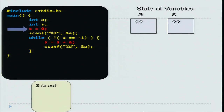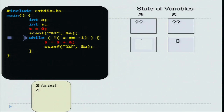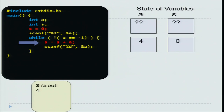Let us trace the execution of this program on a sample input and try to understand how it works. Let us say that I compile the program successfully and run it — I run a.out. Let the first number be 4. After initialization, variable a is undefined and s is also undefined; after the statement s equal to 0, s is now 0. Then you scan variable a, so a becomes 4 because 4 was the input and sum is still 0. You enter the loop and say s equal to s plus a, so sum becomes 0 plus 4 which is 4, and you read the next number.